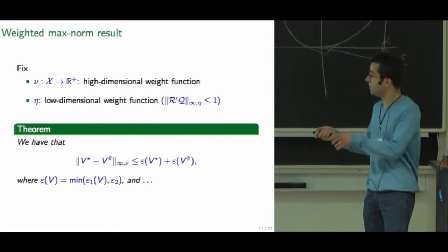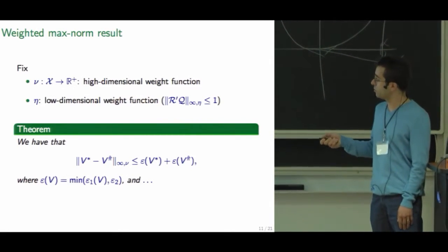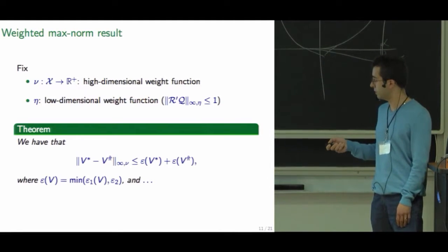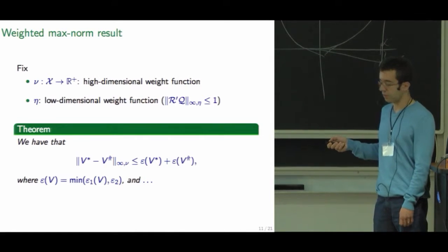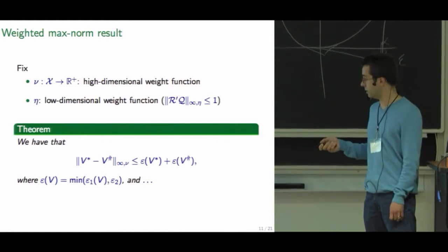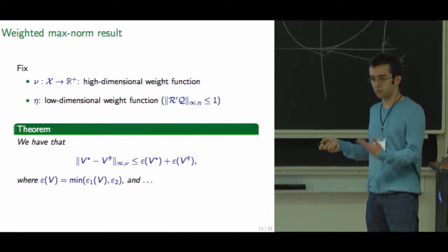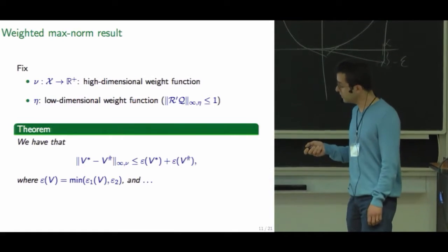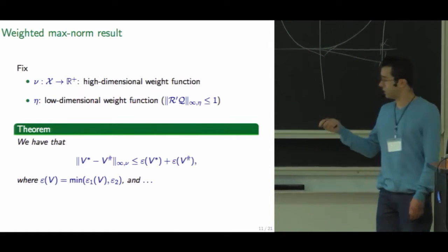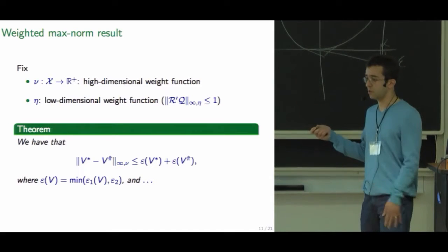And our theorem will be, we have more or less this form: the policy error in this norm is bounded by some combination of two types of error terms. This a priori error term in terms of v star and v pi hat, and an a posteriori term that depends on u star. So before I actually show these error terms, let me just describe what will show up.